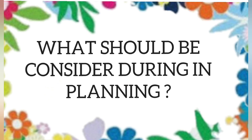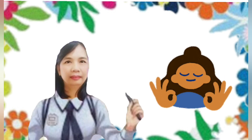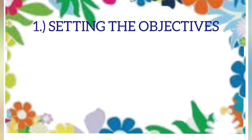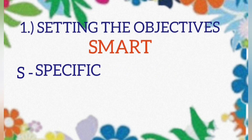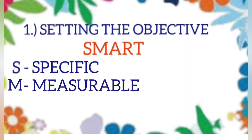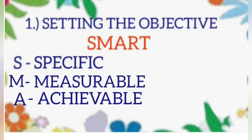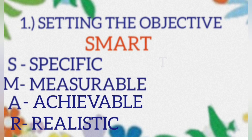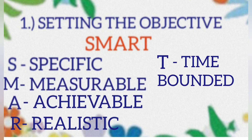What should be considered during planning? Number one: setting the objective. It is what you should accomplish at the end of the lesson. It should be SMART — S: Specific, M: Measurable, A: Achievable, R: Realistic, T: Time-bounded.